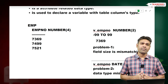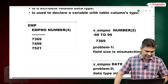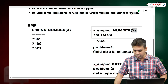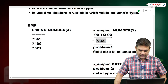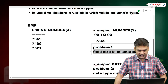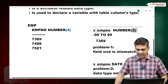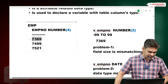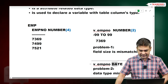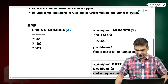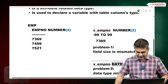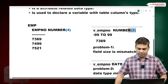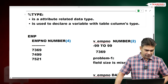So, first understand these problems, then we can understand the solution. Our requirement is to hold the EMP table's employee number column value. If we declare the variable as NUMBER(2), it can hold up to 99 only — it cannot hold a 4-digit value. The table column field size is 4, our variable field size is 2: field sizes are mismatching. And if we declare it as DATE type, data types are mismatching. To avoid mismatches between field sizes and data types, we use the data type %TYPE.